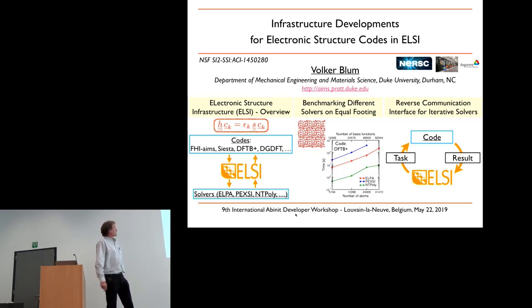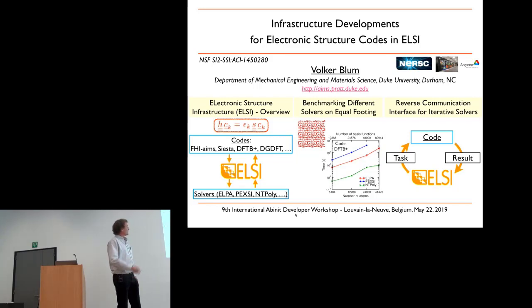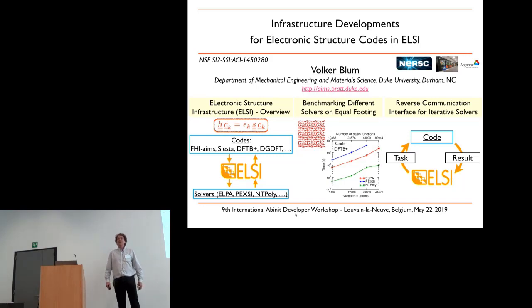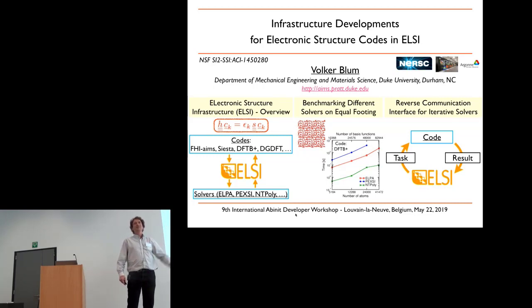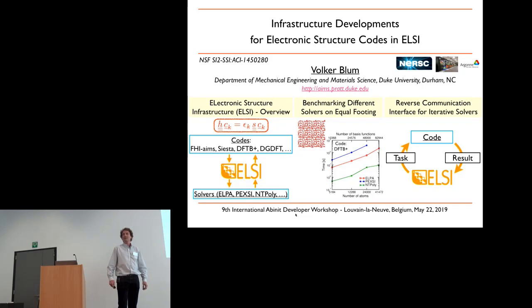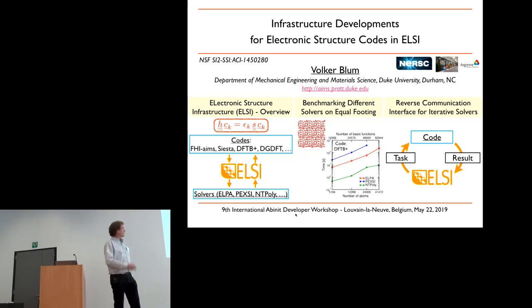I'll try to introduce what ELSI is and why we can use it. Then some things that it enables, which is benchmarking solvers on equal footing. What do we solve here? It's about eigenproblems — specifically the generalized eigenvalue problem — which appears in various forms in every electronic structure code. In our case, from an all-electron code FHI-aims, you have a dense eigenvalue problem and need a relatively high number of eigenvectors, so we need algebraic solvers. In plane waves, you have a lot of basis functions but need relatively few eigenvalues for the SCF cycle, so you can use an iterative solver.